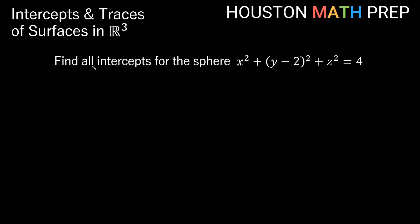Our next example for intercepts: here we have a sphere and we want to find all intercepts for x squared plus the quantity (y minus 2) all squared plus z squared equals 4. So first, our x-intercepts will be when y equals 0 and z equals 0. Now pay careful attention here — z equals 0 will zero out the z-squared term, but when we plug in y equals 0 into the parentheses, we'll actually get 0 minus 2 quantity squared, so we want to be careful about that.